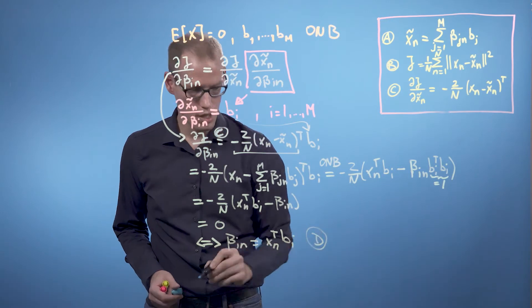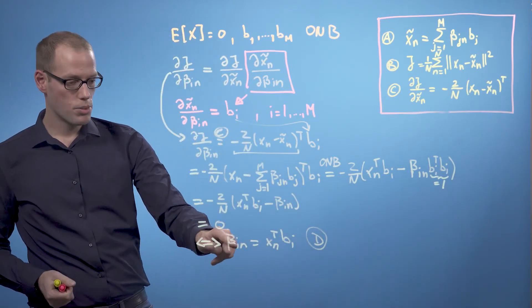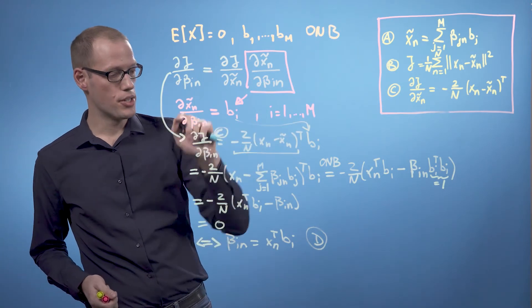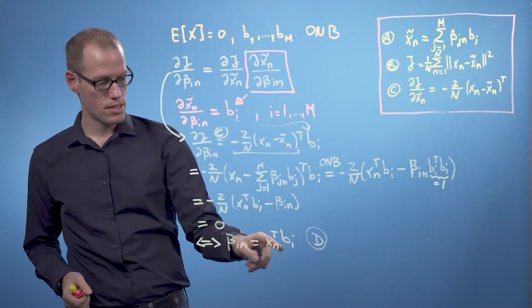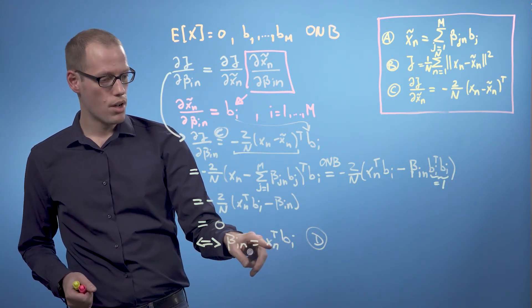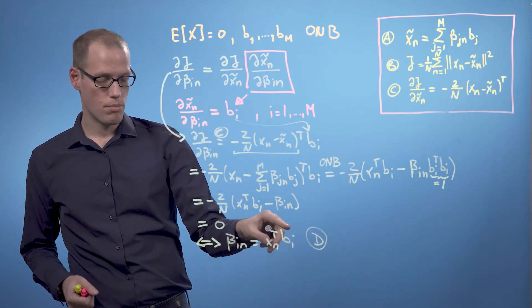What this means is that the optimal coordinates of xn tilde with respect to our basis are the orthogonal projections of the coordinates of our original data point onto the i-th basis vector that spans our principal subspace.